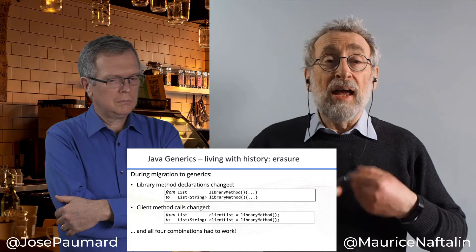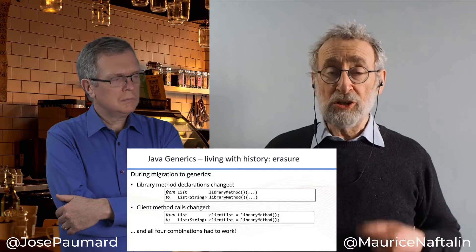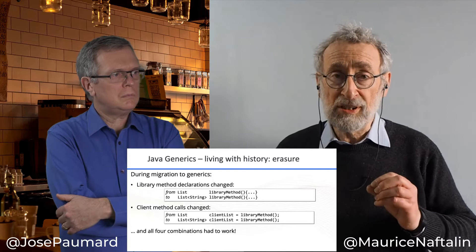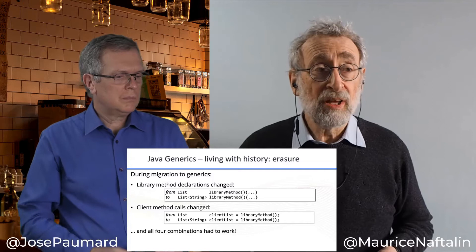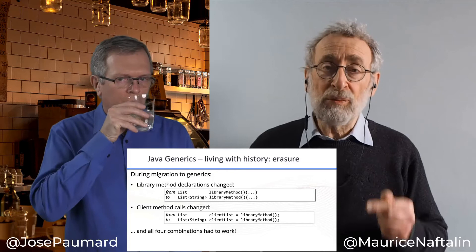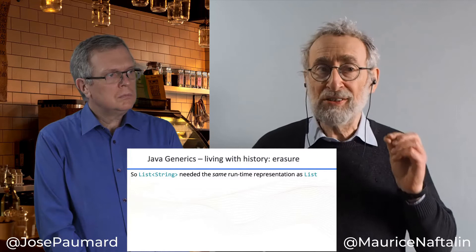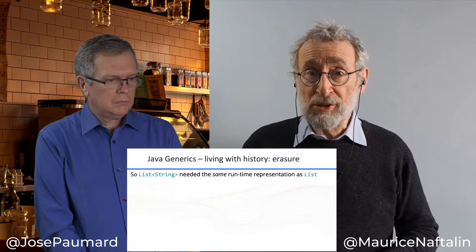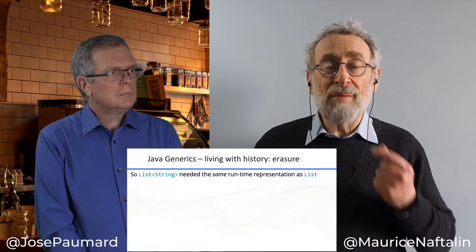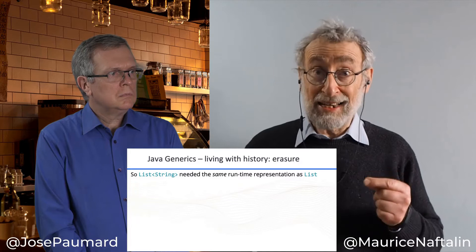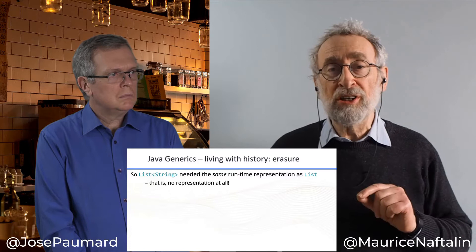Migration was successful, so I don't want to suggest that type erasure was a mistake — it was necessary for migration to succeed and for Java to remain in the forefront of programming languages. For binary compatibility, the runtime representation of a raw list had to be the same as the runtime representation of a list of String. Since there is no runtime representation of the generic type of a raw list, there could be none for a list of String either — it had to be erased. And so the solution the Generic Java designers adopted was type erasure.